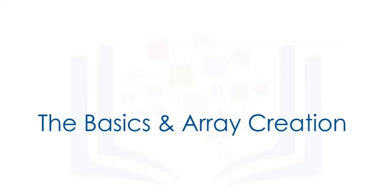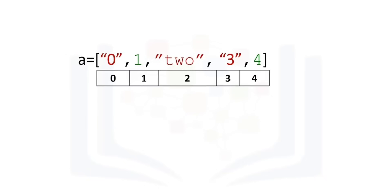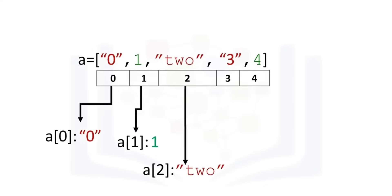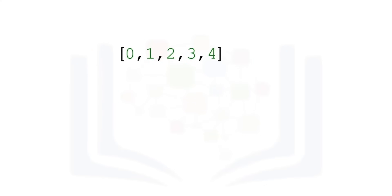Let's go over how to create a NumPy array. A Python list is a container that allows you to store and access data. Each element is associated with an index. We can access each element using a square bracket. A NumPy array, or ND array, is similar to a list. It's usually fixed in size, and each element is of the same type — in this case, integers.